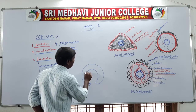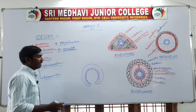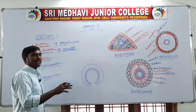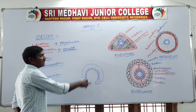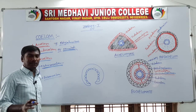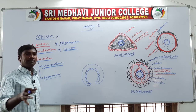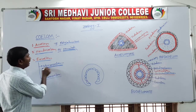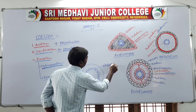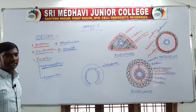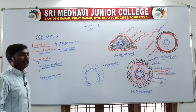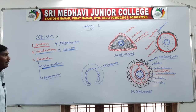In schizocoelom, the mesodermal membranes present on the 4D blastomere cells undergo splitting, and that splitting leads to the formation of the coelom. That coelom formed by the splitting of the mesodermal membrane from the 4D blastomere cells is called schizocoelom. Example phyla: Annelida, Arthropoda, and Mollusca.